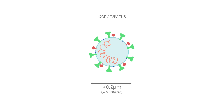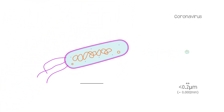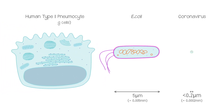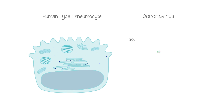To put that into context, a bacterium — E. coli here for instance, which resides in all our guts — is 5 micrometres long, and a human pneumocyte, the cells that make up your lungs, is 9 micrometres wide. There are actually two types of pneumocytes. Although type 2 only makes up 10% of the cells that line your respiratory surfaces, these are the ones actually infected by the coronavirus. In terms of volume, therefore, about 90,000 coronaviruses would fit into a single type 2 pneumocyte.